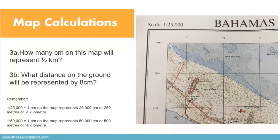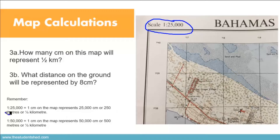Remember that 1 to 25,000 is the same as 1 centimeter on the map representing 25,000 centimeters on the ground, or 250 meters on the ground, or a quarter of a kilometer on the ground. That's what 1 to 25,000 means. Looking at this map, the scale says it's 1 to 25,000, so these are the details we're working with.